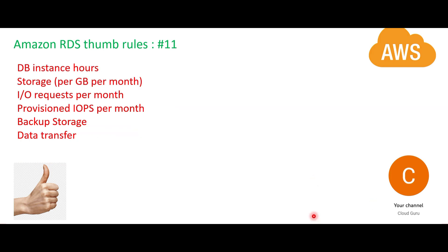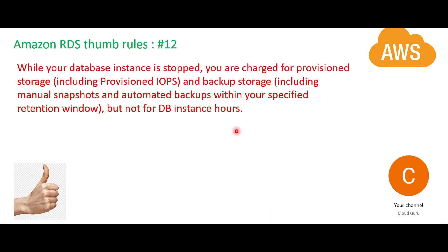When hosting a database, you pay for: DB instance hours (compute), storage (where your data is held), I/O requests (ETL processes or websites hitting the database), provisioned IOPS, backup storage, and data transfer costs. In AWS, whatever database instance you have can be continuously set as a backup.